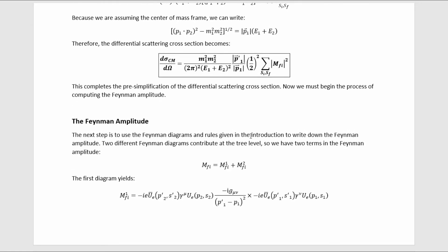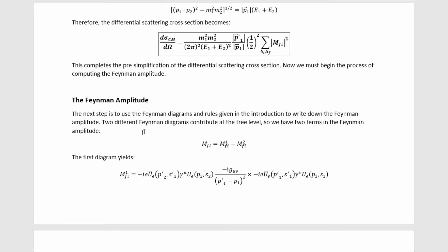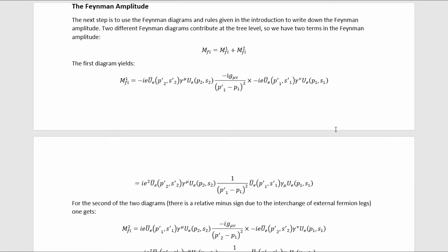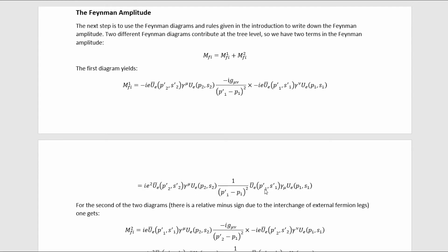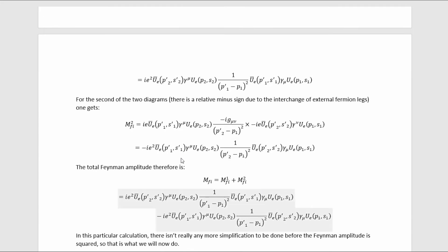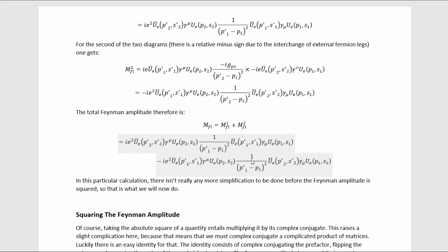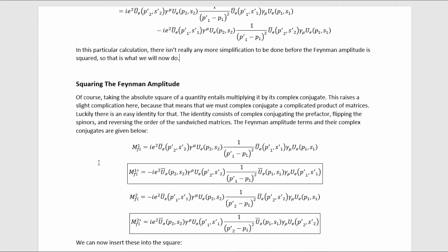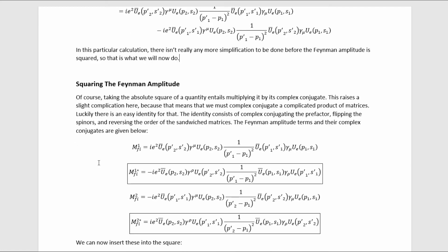The next step is to use the Feynman diagrams and rules to write down the Feynman amplitude. Two different Feynman diagrams contribute at the tree level, so we have two terms. Looking at the first diagram and applying the Feynman rules, we get the contribution from the first diagram. Looking at the second diagram gives us its contribution. Therefore, the total Feynman amplitude for tree-level Møller scattering in QED is this two-term expression. There isn't really any more simplification to be done before squaring the amplitude — and squaring requires taking the complex conjugate of a complicated product of matrices and spinors, which is non-trivial.